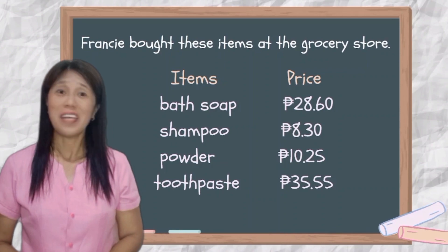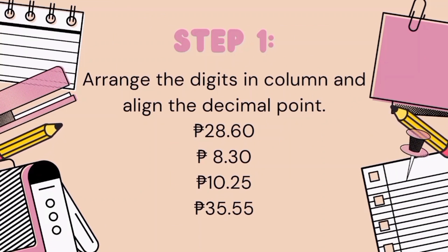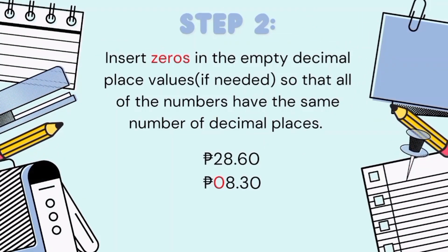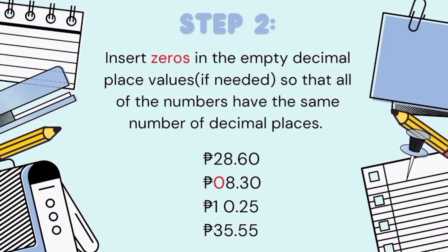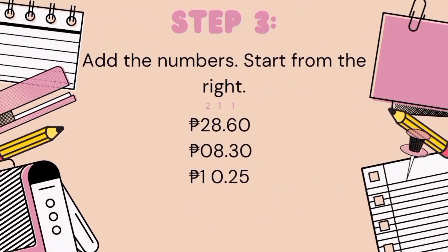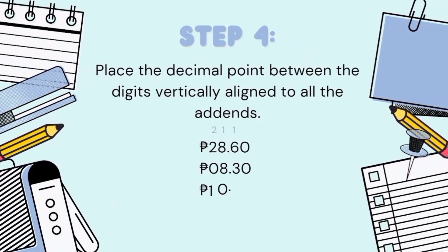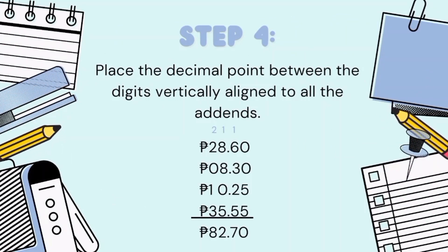How do we add or subtract decimals? Let's recall! Step 1: Arrange the digits in column and align the decimal point. Step 2: Insert zeros in the empty decimal place values if needed so that all the numbers have the same number of decimal places. Step 3: Add the numbers starting from the right. Step 4: Place the decimal point between the digits vertically aligned to all the addends, then add.